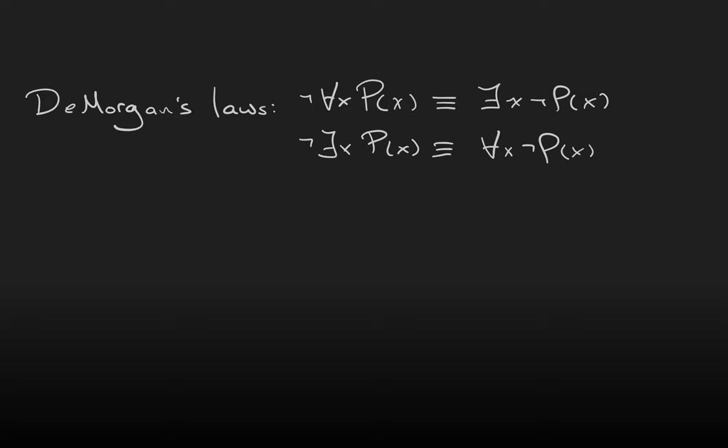The reason that these rules are true, in addition to the reason that they're called DeMorgan's laws, is because we can think of a universal statement as a big AND. For a universal statement to be true, P has to be true for this object, and this object, and that object, etc.